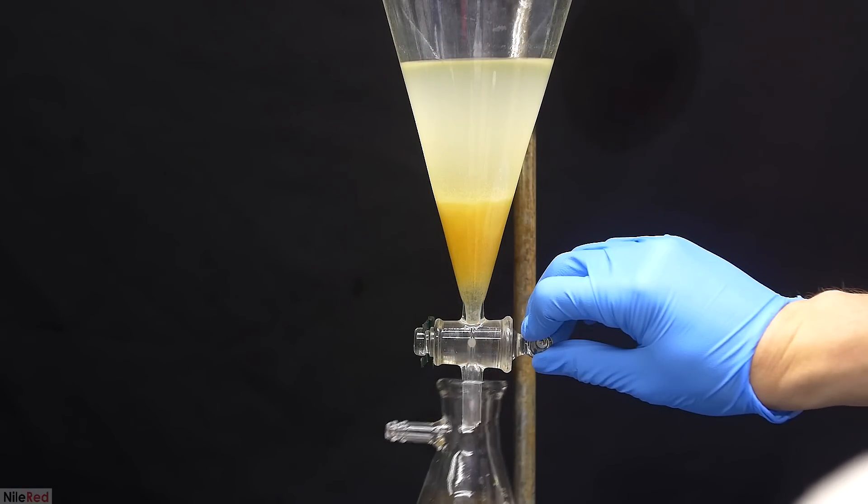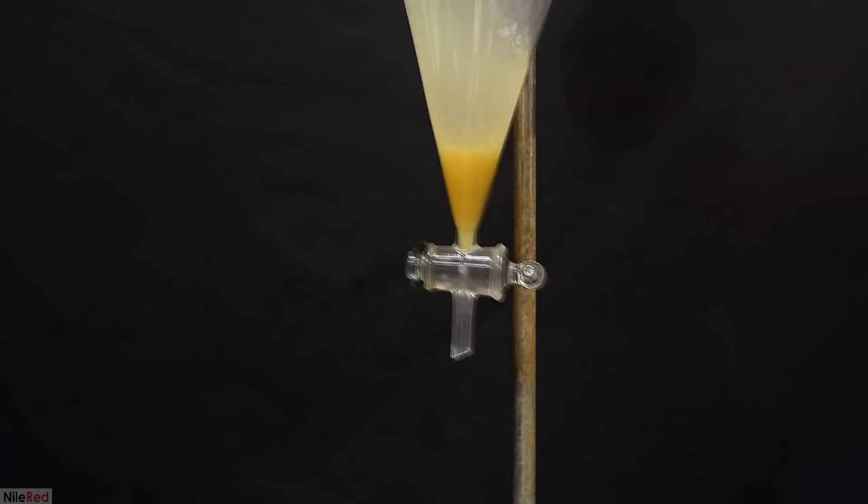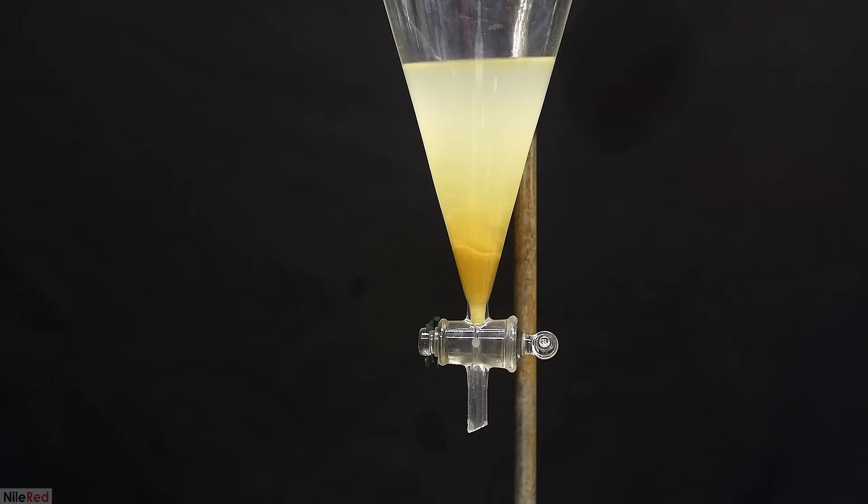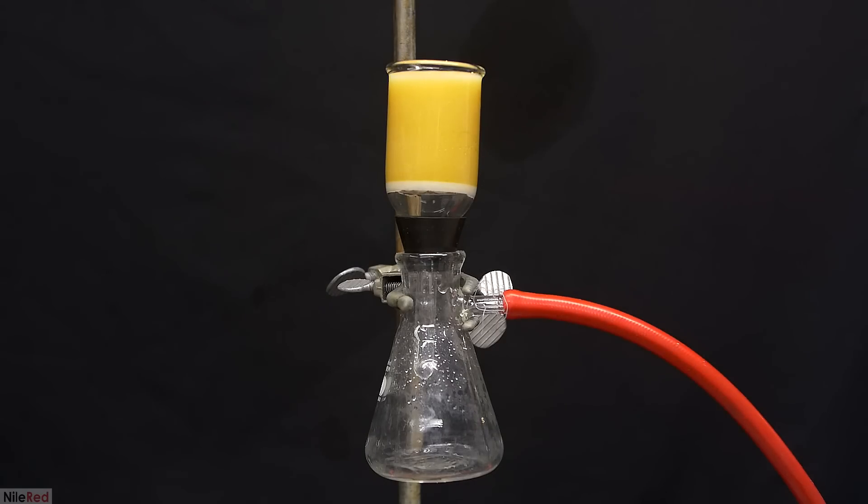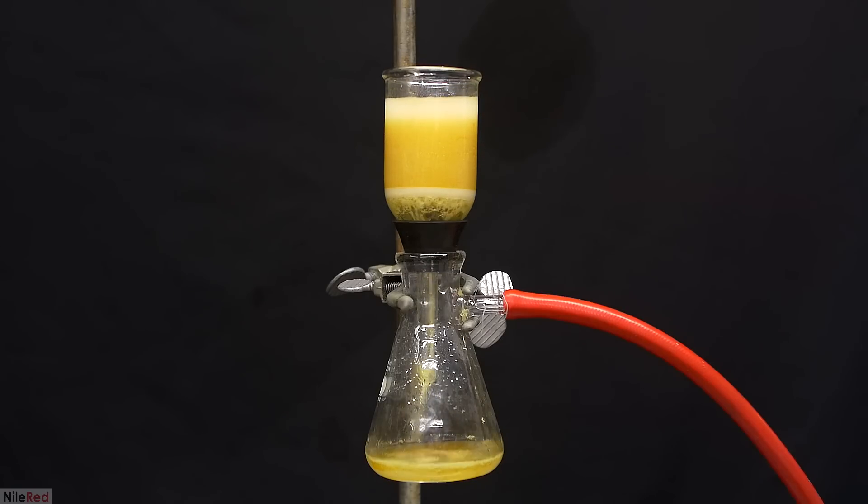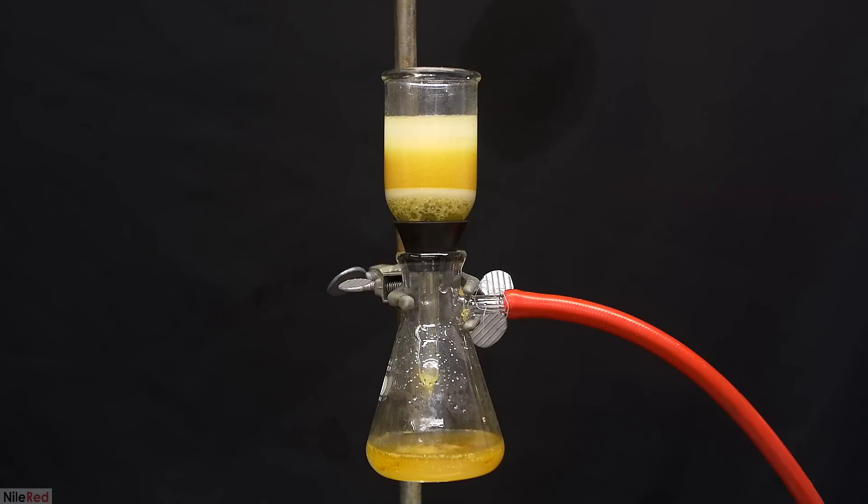So this bottom oil layer, which should contain cinnamaldehyde and benzaldehyde, is drained into a small Erlenmeyer flask. Just by looking at it, you can see that our oil is pretty murky and when we take a closer look, we can see solids floating around. Most of the solid stuff is just salt that we added earlier and it's pretty easily separated out by a vacuum filtration.